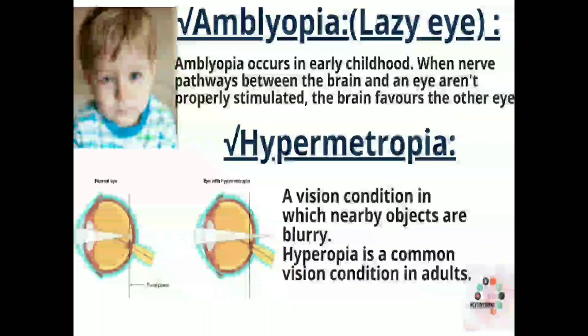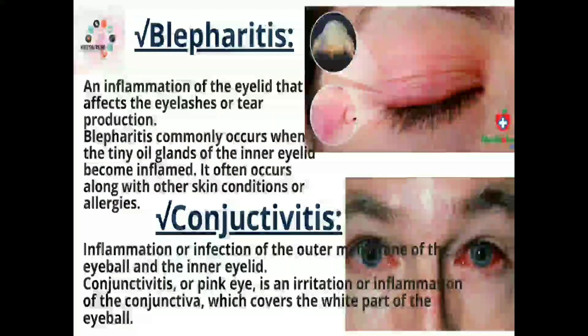Next is hypermetropia, also called hyperopia — a vision condition in which nearby objects are blurry. It is a common vision condition in adults.